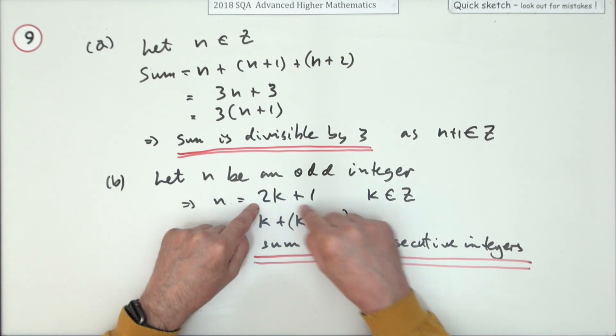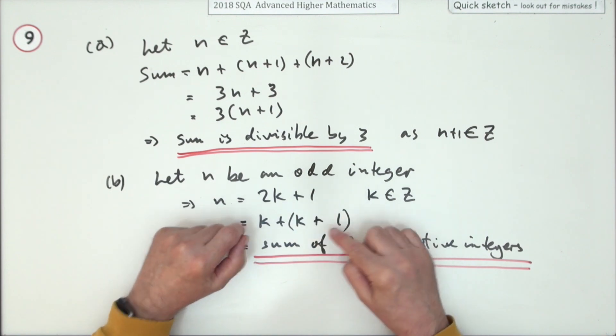And if you're going for two k minus one, it still would have been the sum, because that would have been k plus k minus one, and they're still consecutive.